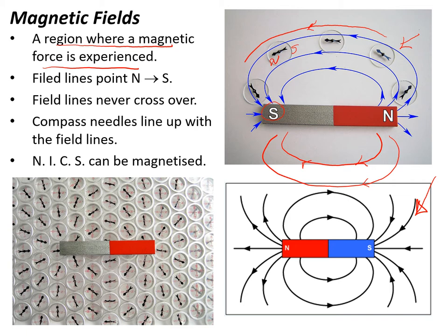A magnetic field is a region where a magnetic force is experienced. Each of these little compasses is like its own little magnet. The point one end is the north and the tail is the south. You can see that the north end of the compass is attracted to the south end of the magnet. All the magnetic materials: nickel, iron, cobalt and steel.